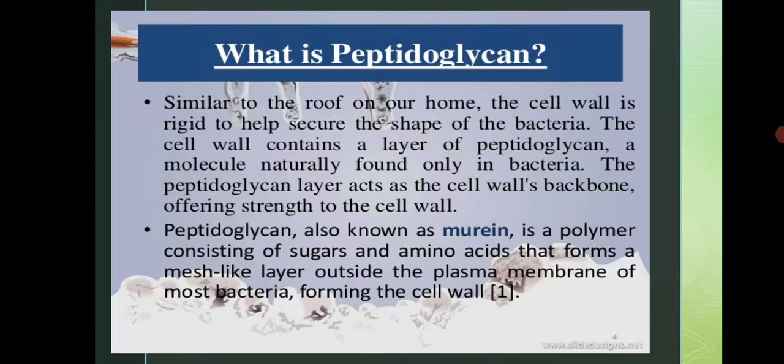The question arises: what is peptidoglycan? You might have studied the general concept of peptidoglycan in your previous classes. This peptidoglycan is the major component of the bacterial cell wall. It is found in both gram-positive as well as gram-negative bacterial cell walls. There is a difference in the content of peptidoglycan — in gram-positive it is thick, and in gram-negative the layer of peptidoglycan is thin.